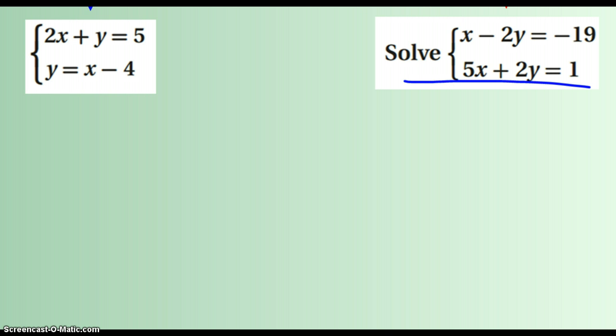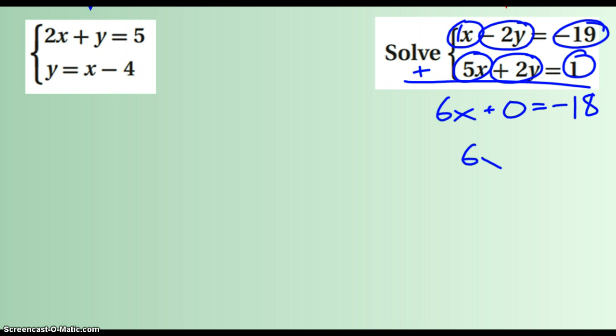You can add both equations together. So, for instance, I'll just go vertically. 1x plus 5x is 6x. Negative 2y plus 2y is 0. Negative 19 plus 1 is negative 18. So here's what we've got: 6x equals negative 18. So x must equal negative 3.